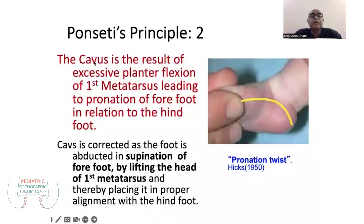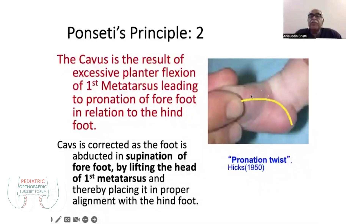The second principle: there is a cavus in the foot, which is the result of excessive plantar flexion of the first metatarsus, leading to pronation of the forefoot in relation to the hindfoot. If you look at this foot, it looks supinated, but the first ray of the first metatarsus is depressed compared to the forefoot — this is called the pronation twist.